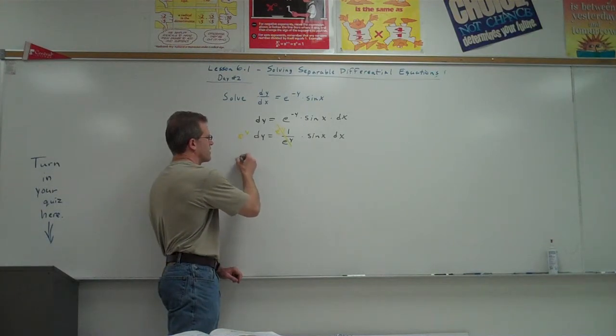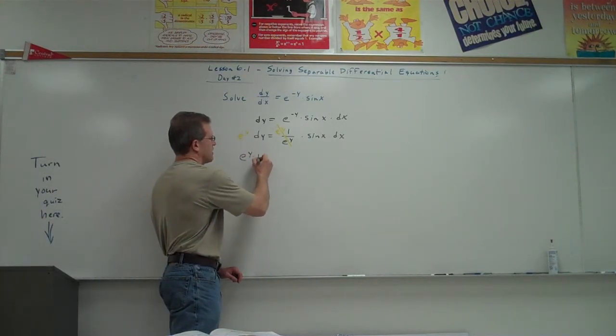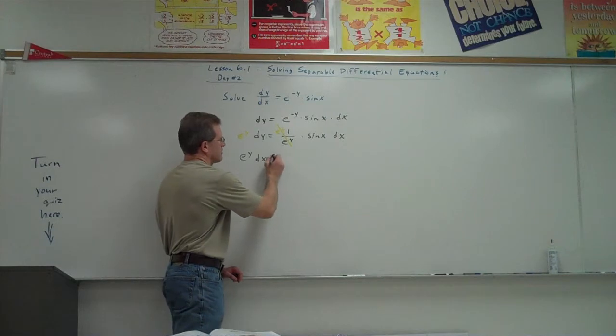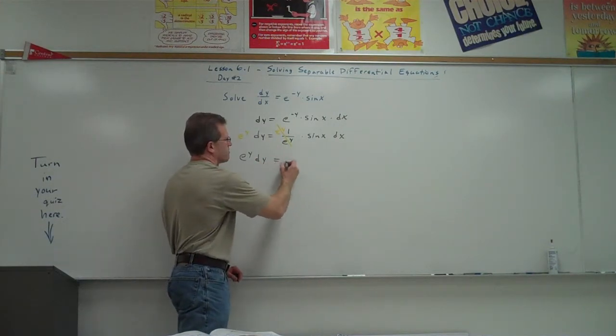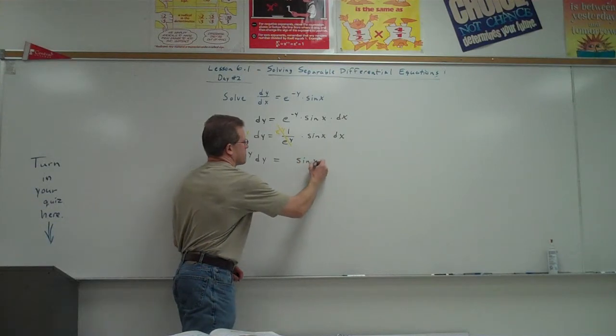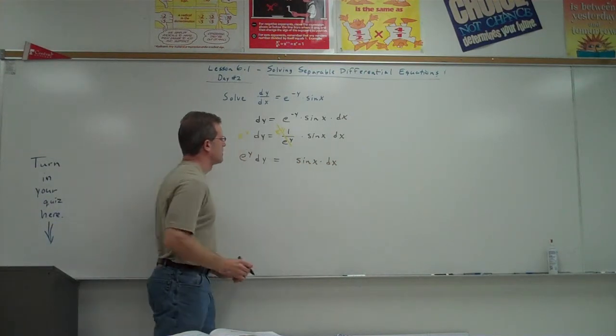It's always to try to get the y's and x's separated with the equal sign between them. So usually we try to get the y's to the left and the x's to the right. But that doesn't necessarily have to be done that way. You could have the y's on the right and the x's on the left.